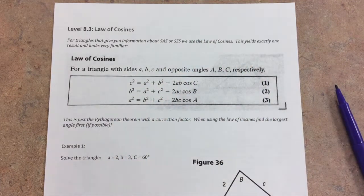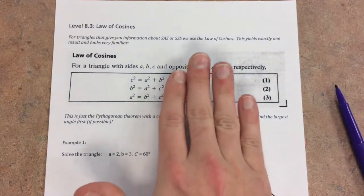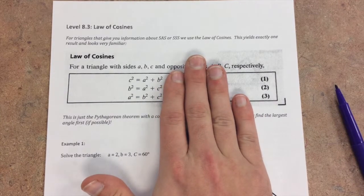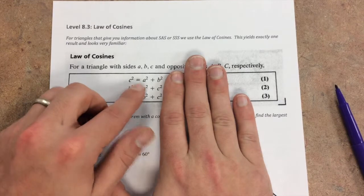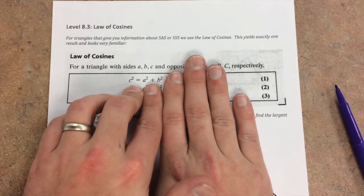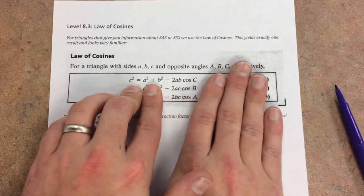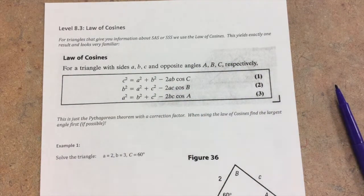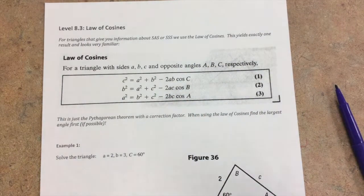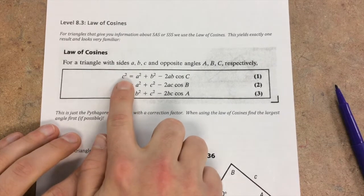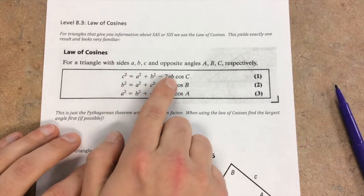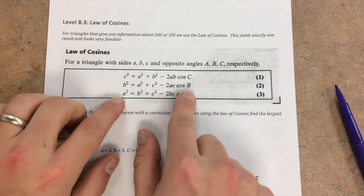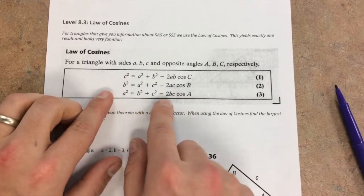This yields exactly one result and it looks very familiar. You might be wondering why we have these three formulas. The best way I can explain this, if C is the longest side, this looks exactly like the Pythagorean Theorem. And then we just add on this extra piece. This extra piece is the correction factor for our triangle not being a right triangle.